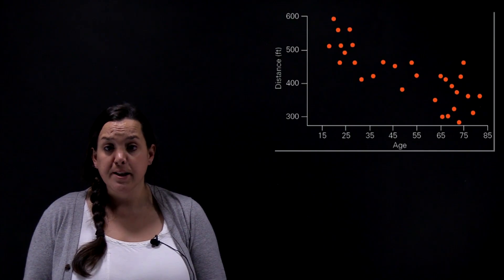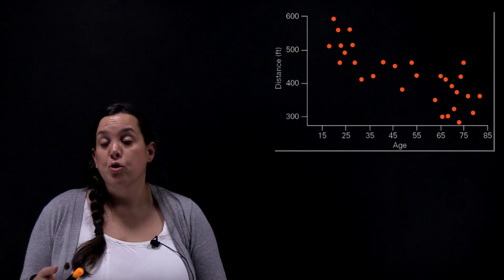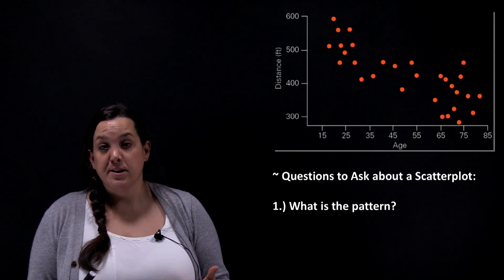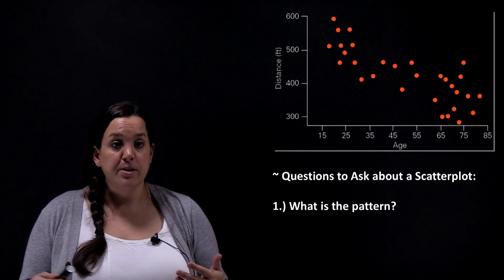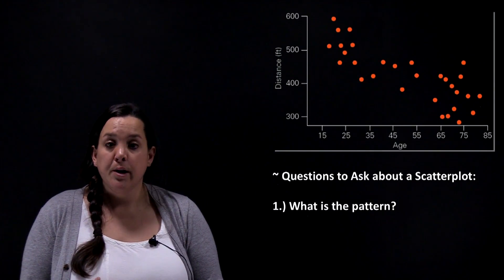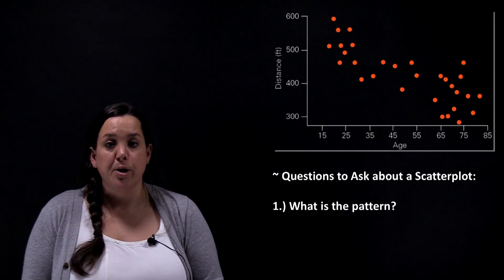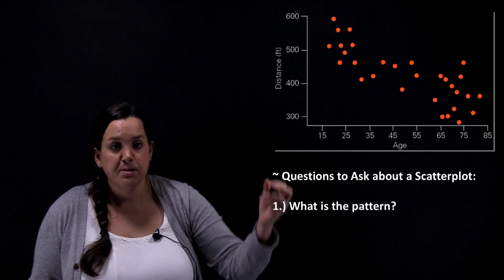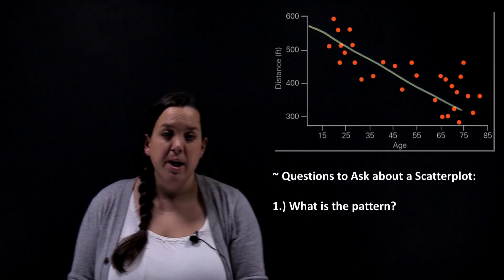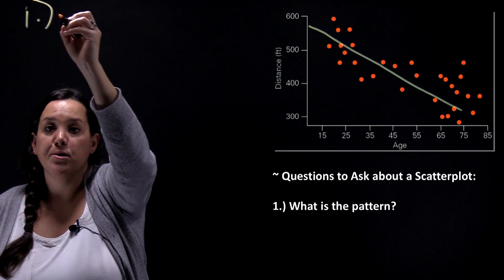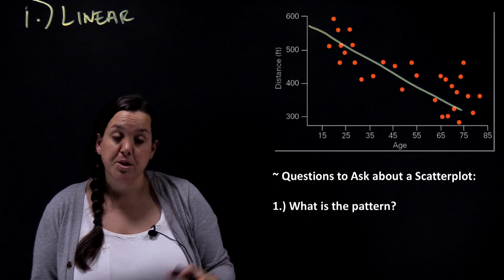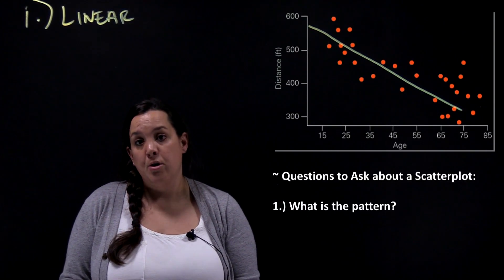When looking at a scatterplot, you want to describe it by looking at four different areas. The first area is the pattern. For different disciplines you might have different types of patterns — linear, no association, or perhaps quadratic. Looking at this particular scatterplot, you can see that there's a line being formed, so we would say the pattern is linear.